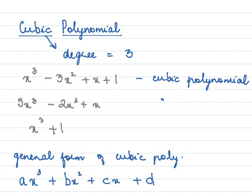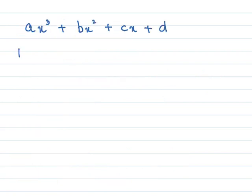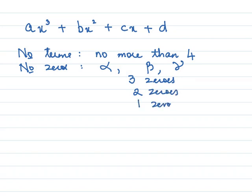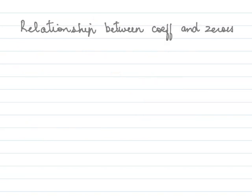Examining a cubic polynomial, it has not more than four terms — four or fewer. The number of zeros can be alpha, beta, and gamma — that is, it could have three zeros, two zeros, one zero, or no zeros, but never more than three zeros. The degree of a cubic is 3.